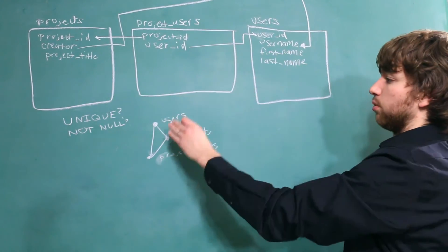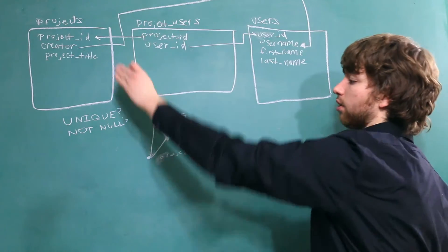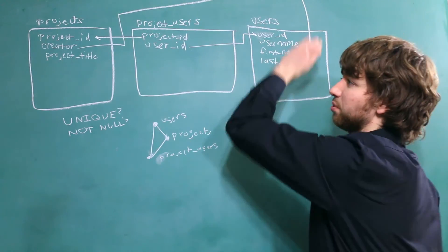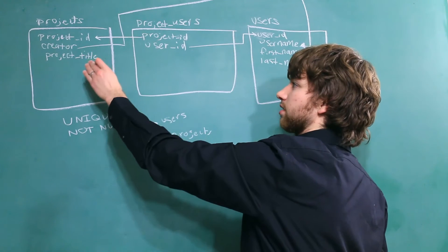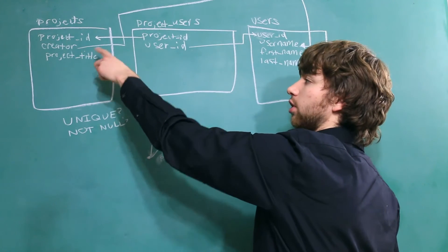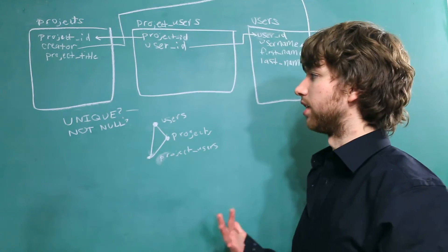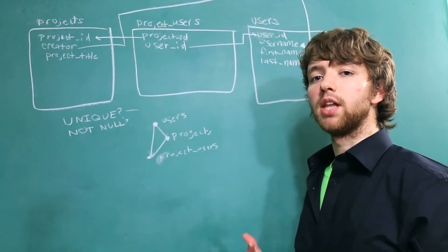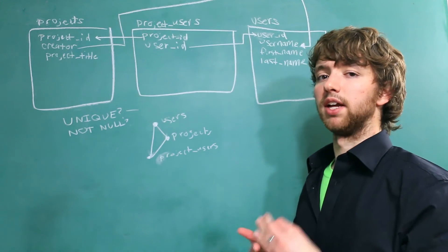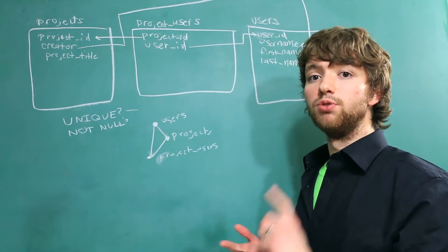So let's start with the users table and kind of move down the family tree. So we'll go to its child and we'll start the projects. And we'll look at this foreign key, creator. Should it be unique? The best way to think about this is to ask what would it be like if it was unique and what would it be like if it was not unique?